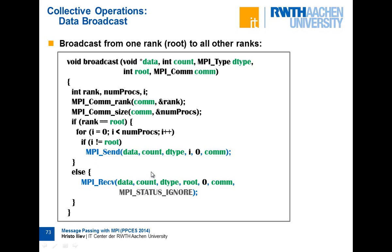Here is how you can implement broadcast using send and receive. You query the number of processes and the rank of the current process, then check if the current process rank equals the root rank. If this is the root process, it loops over all ranks from zero to nprocs and sends a message to everyone except itself. Otherwise, if this is a non-root process, it just receives the message. This simple implementation is linear — its complexity grows linearly with the number of processes, so it doesn't scale on very large machines.